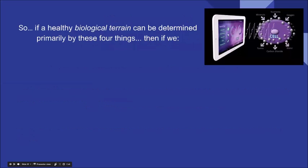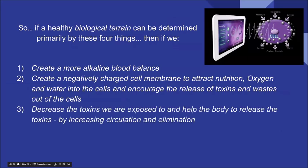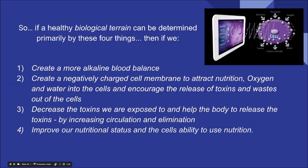So PEMF can kill diseased cells without affecting healthy cells, and also boost the body's own anti-tumor mechanisms. If a healthy biological terrain is determined by those four factors, then: creating a more alkaline blood balance, creating a negatively charged cell membrane to attract nutrition and oxygen and encourage toxin release, decreasing toxin exposure and increasing elimination, and improving nutritional uptake — would we have healthier cells, organs, and bodies?